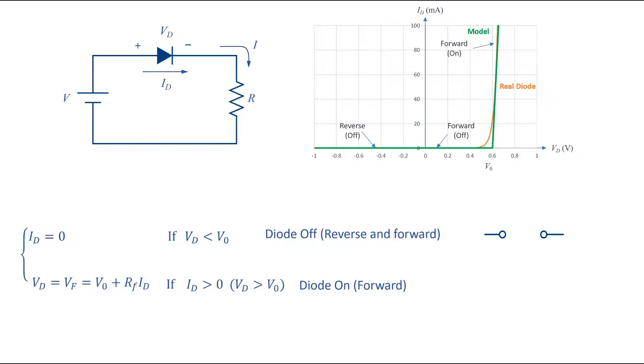The diode voltage consists of a constant part which can be shown by a battery and the part that linearly changes with current that can be shown with a resistor which is called forward resistance RF.